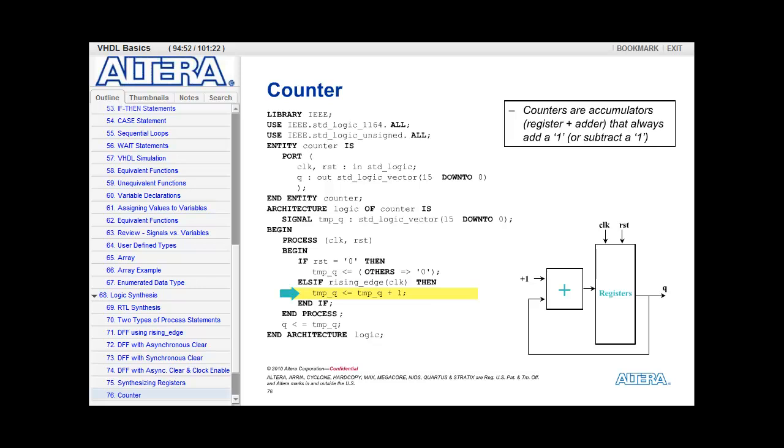So we're taking the previous value of tempQ, adding 1, and assigning it to itself. Then, lastly, we assign the value of tempQ to the Q output of the counter. Again, the synthesis tool recognizes structure and builds the counter logic for it for me in hardware.